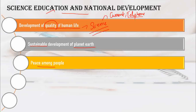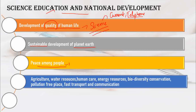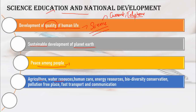Science education also promotes peace among people in society and in a country. Science education removes superstitions — if you think scientifically, you will not accept superstitions. Science also plays a major role in agriculture, water resources, human care, energy resources, biodiversity conservation, pollution-free environments, and fast transport and communication.